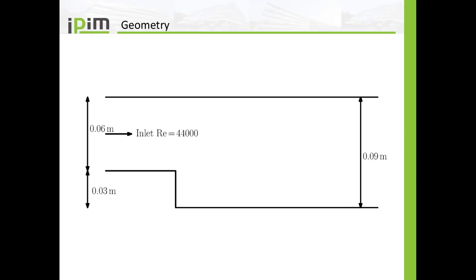The geometry is the same as in the last tutorial for the steady-state simulations. On the left-hand side we have an inlet with a width of six centimeters. On the right-hand side we have an outlet with a width of nine centimeters. In between we have a step, and we will set the velocity on the inlet so we have a Reynolds number of approximately 44,000, giving us a fully turbulent flow.